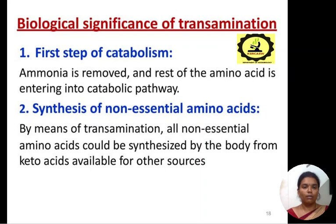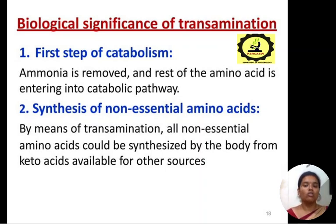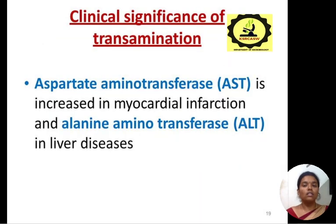Next is the significance of transamination. The first step of catabolism is that ammonia is removed and the rest of the amino acid enters the catabolic pathway. Non-essential amino acids can also be synthesized by the body from keto acids via transamination. The clinical significance includes aspartate aminotransferase, which is elevated in myocardial infarctions, and alanine aminotransferase, which is elevated in liver disease.